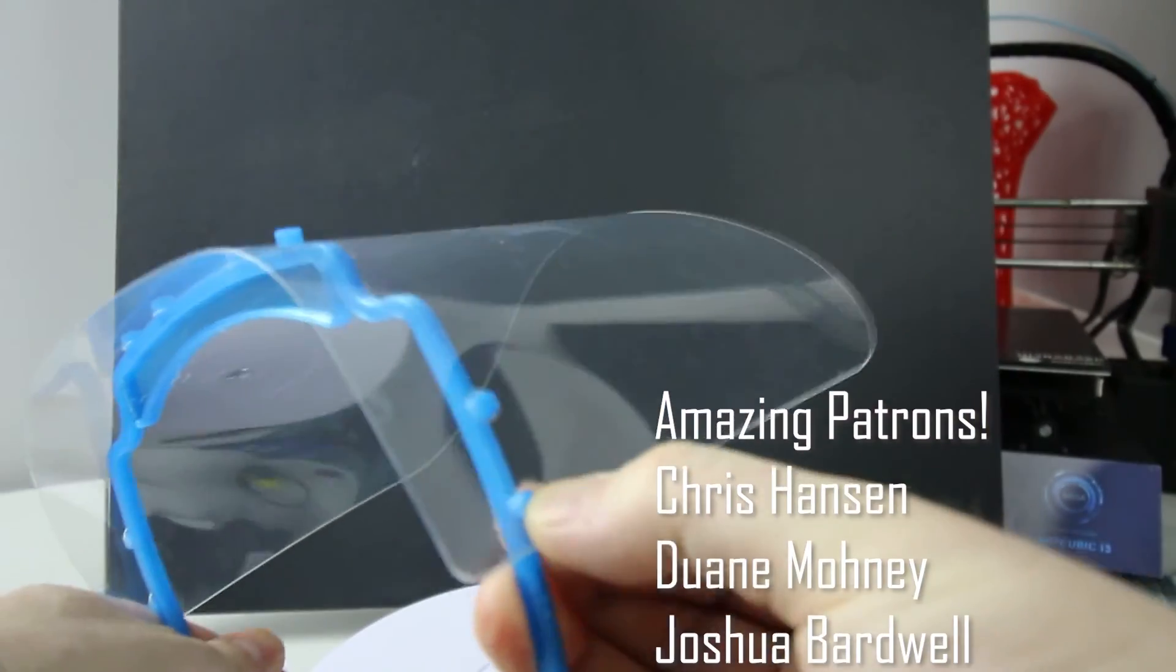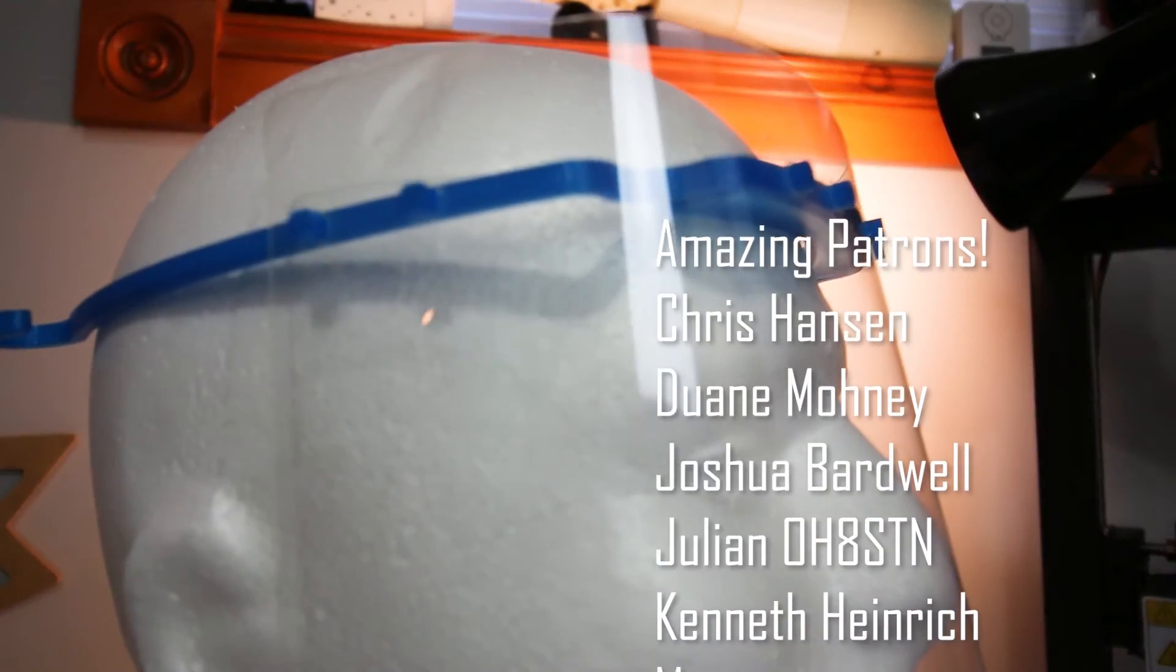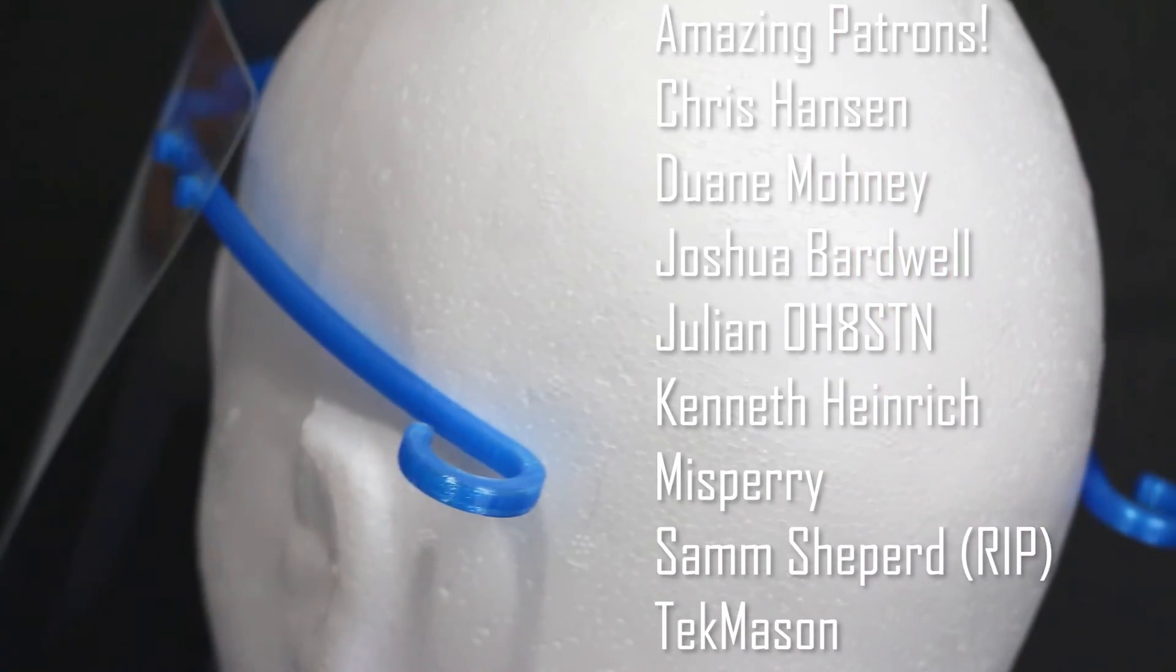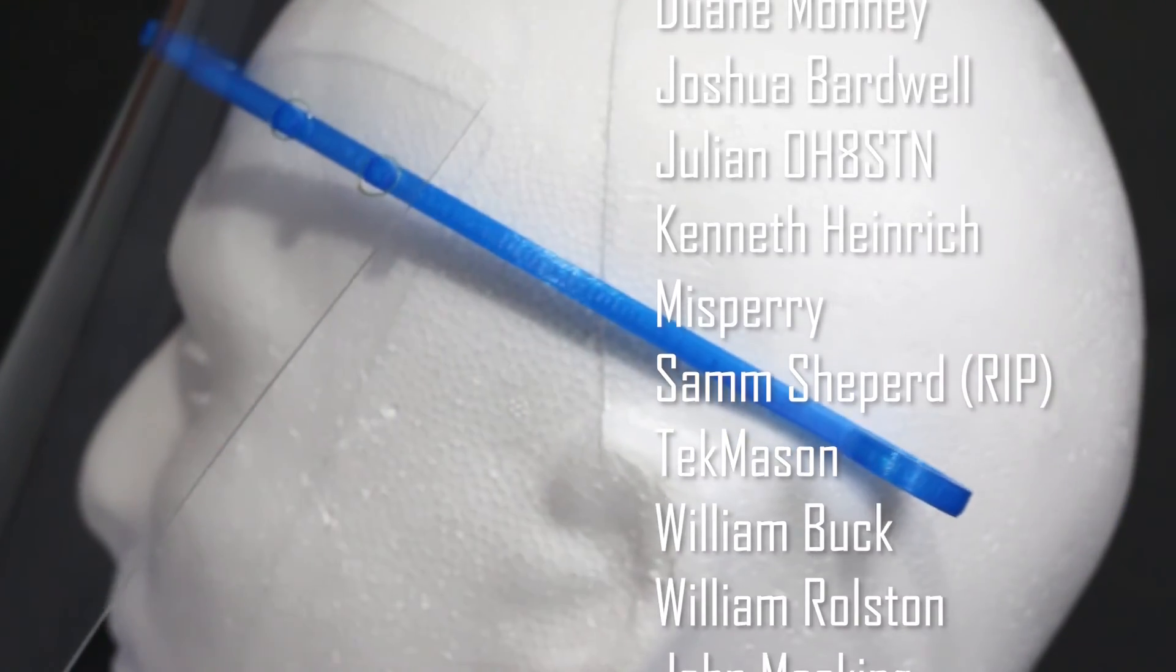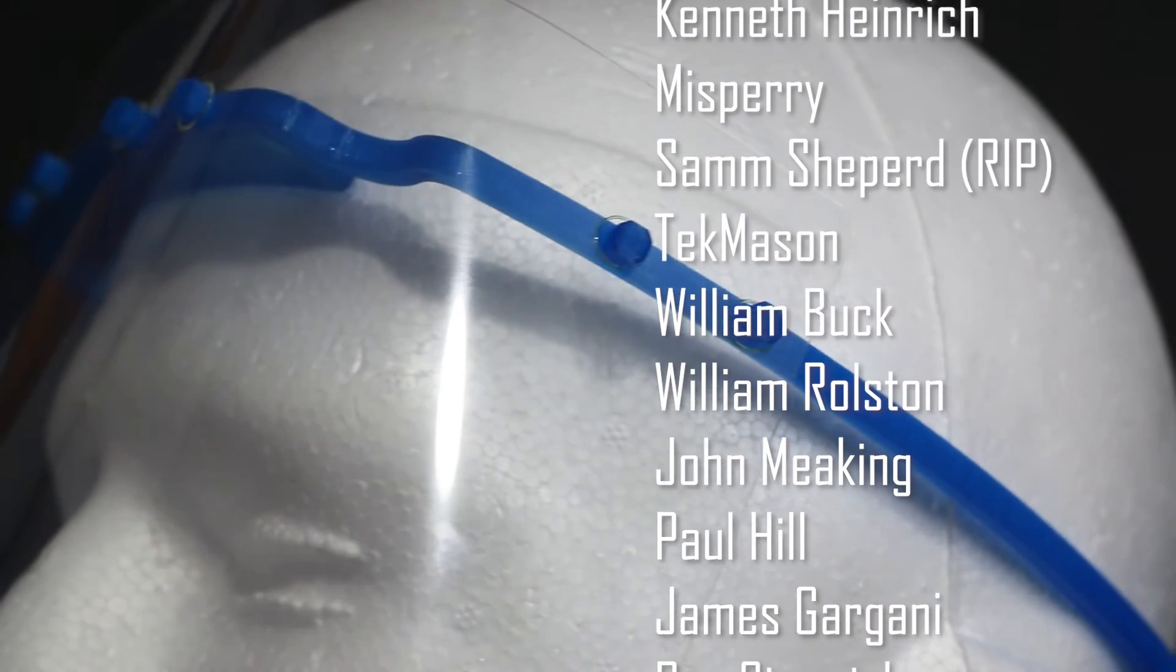I've stepped up production of these. Anytime my printer is not running on something else it's printing off these bands. And from Amazon this week if mail is still running I should have plenty of the face protector sheets coming in. They're acetate sheets for overhead projectors at a very reasonable price point. So I should be all set.